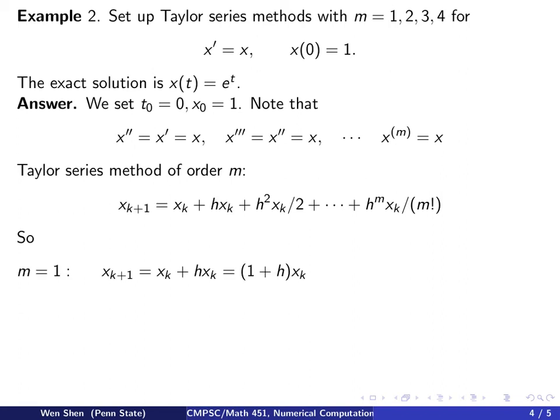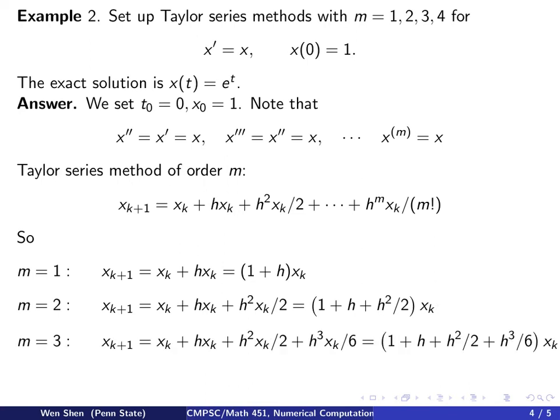So now it's simple to write out. If M equals to 1, I will just take two terms here, I write it out, and I can take out the common factor xk, I have 1 plus h. For M equals to 2, I will take three terms here, which I wrote out, taking out xk I get this, and for M equals to 3, I will take four terms, because M is M plus 1 terms, and taking out xk I will get this.